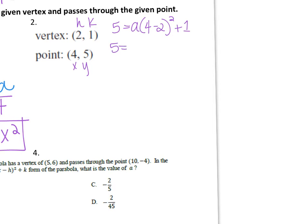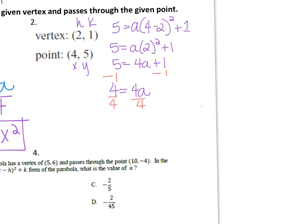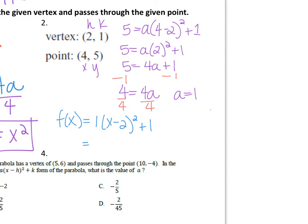That gives 5 equals a times 2 squared plus 1, so 5 equals 4a plus 1. To get a alone, I subtract 1 from each side: 4 equals 4a. Dividing each side by 4, a equals 1. Rewriting the equation, f of x equals 1 times x minus 2 squared plus 1, which simplifies to x minus 2 squared plus 1.